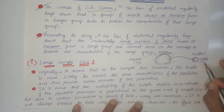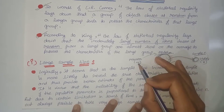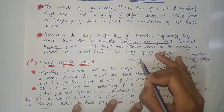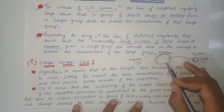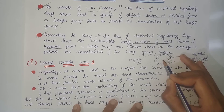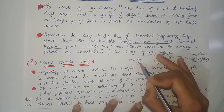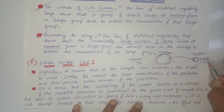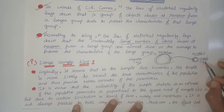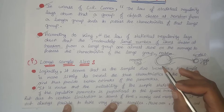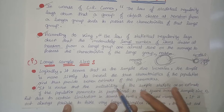We want to calculate the mean of the population, that is mu, which is our parameter. Now, instead of calculating the mean of all the items in the population, we can estimate the value of this parameter — the mean of the population — from the statistic, that is the mean of the sample. By calculating the sample mean only, we come to know the value of the population mean, mu.